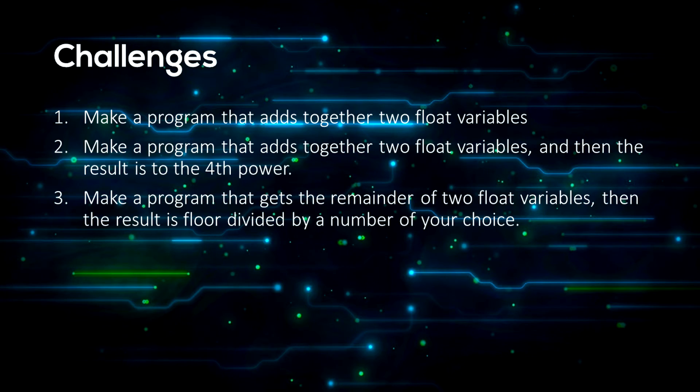Now for some challenges for you to do by yourself. As you know I will be giving the solutions in a later video. First, make a program that adds together two float variables, not integers, but floats which are decimal numbers, and then raises the result to the fourth power. Make a program that gets the remainder of two float variables, then floor divides the result by a number of your choice.